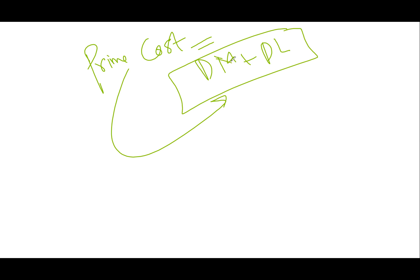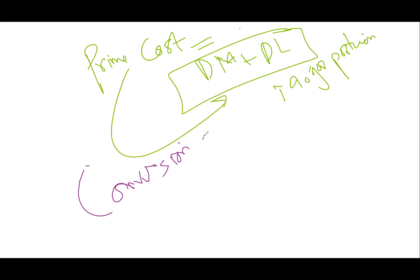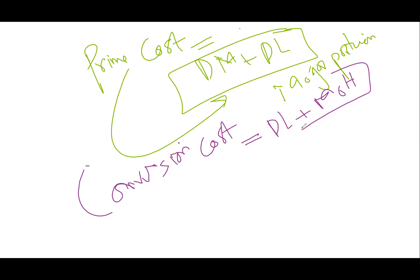Why do we need prime cost and conversion cost? Prime cost is direct material plus direct labor. We call it 'prime' because in most manufacturing businesses, direct material and direct labor together make up the major portion of total product cost.